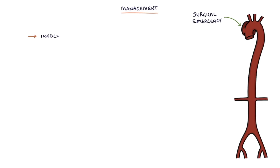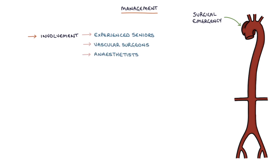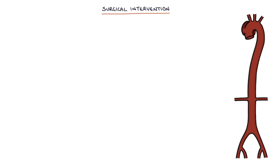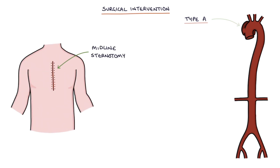Let's talk about management. Aortic dissection is a surgical emergency and needs immediate involvement of experienced seniors, vascular surgeons, anaesthetists, and intensive care teams. There is a very high mortality. Analgesia, for example morphine, is required to manage pain. Blood pressure and heart rate need to be well controlled to reduce stress on the aortic walls, usually with beta blockers. A type A dissection, affecting the ascending aorta before the brachiocephalic artery, may be treated with open surgery via a midline sternotomy incision to remove the affected section and replace it with a synthetic graft.